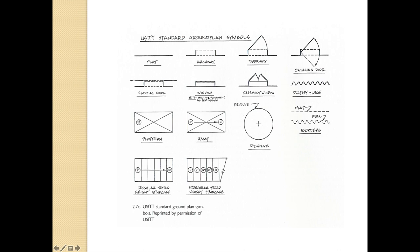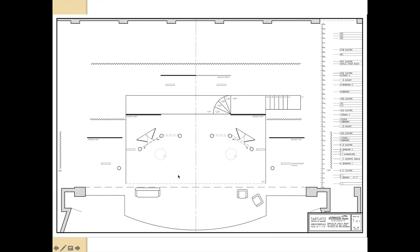Hopefully these standard ground plan symbols will help you in drawing the apartment. Here's another ground plan to look at overall — we see the stage, a platform that is 0 inches at one part of the stage and 14 inches upstage, suggesting a raked platform. Behind it is another platform at 14 inches, then steps going up 20, 30, 38, 46, and 54 inches — this is half of a spiral staircase going up to a 54-inch platform.